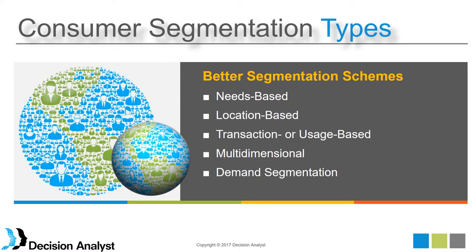We also have multidimensional segmentation — where we look at multiple aspects of a consumer. Attitudes and lifestyle can compose one segmentation, and another could be media consumption patterns or brand perceptions. You take two, three, or four different segmentations, cross them, and form larger segments where the learnings can be more robust. And demand segmentation has gotten a lot of press recently. Some companies call it demand space segmentation, considering different types of needs within different usage occasions, acknowledging that humans are complex creatures.